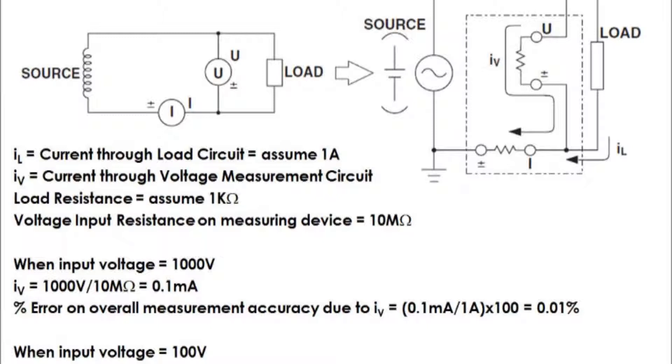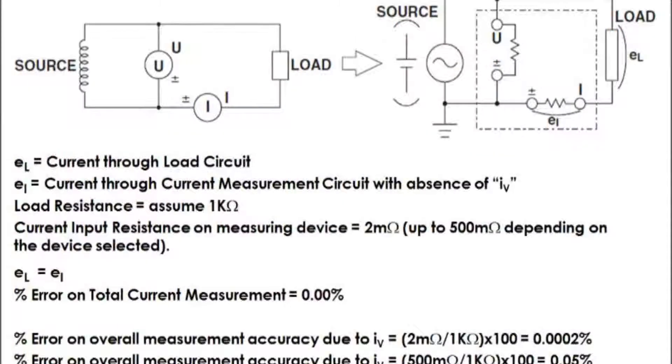Now, can you imagine what would happen if I were to use the same circuit to measure relatively small currents? Exactly. The effect of IV on the overall measurement circuit would be large. This brings me to my second case.